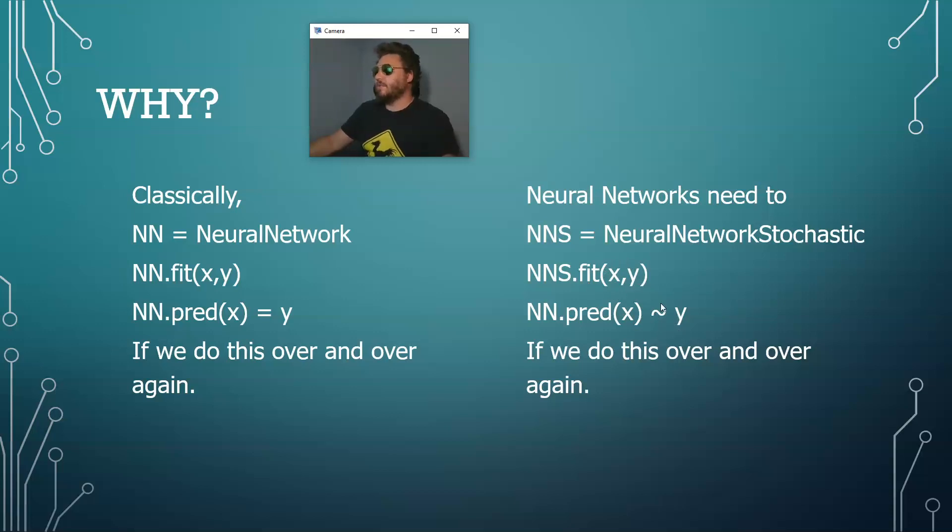And it's going to change y. So when we run this over and over and over again with the same data and we get a little bit different y every single time, that is considered dreaming in the neural network.